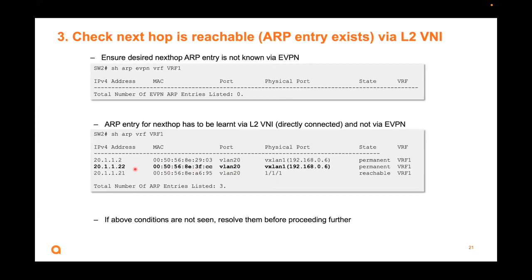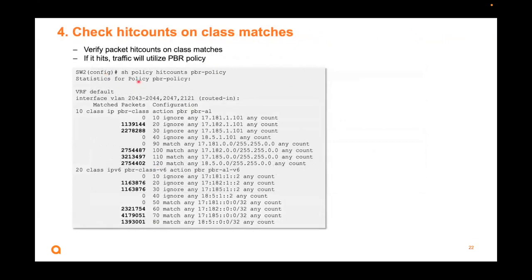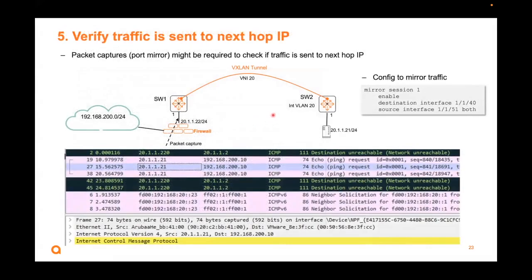Make sure the next hop device is actually online — that its MAC and IP are being learned by ARP. You can show policy hit counts and PBR policy count matches; they should always increase if real traffic is going through. This applies for both IPv4 and IPv6. To verify traffic is being sent to the next hop, you may need to do a packet capture or port mirror on the switch. If the firewall says it's not receiving any traffic, mirror the port to a Wireshark capture to ensure you are forwarding traffic to the next hop.